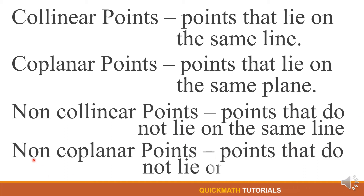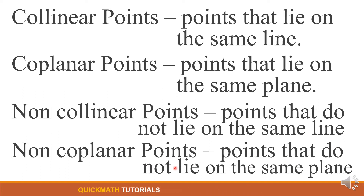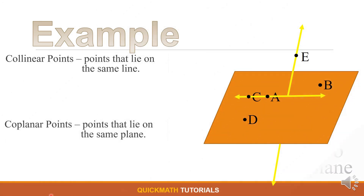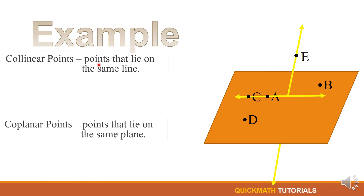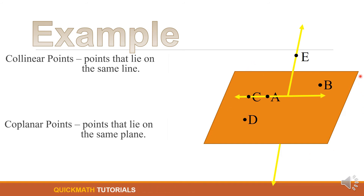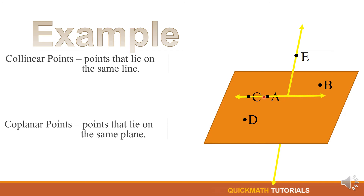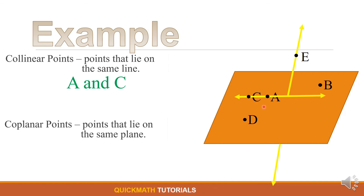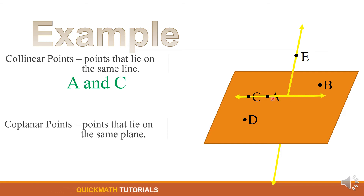For collinear points — since they are the points that lie on the same line — here in our illustration, we have a line, and the points that lie on this line are points A and C. So these two points are called collinear points.